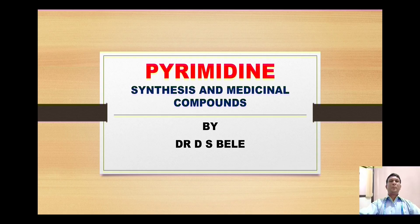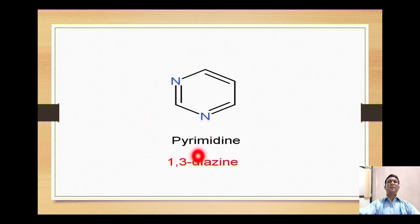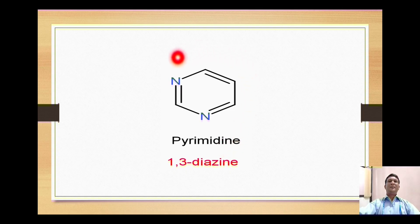Our today's topic is a very important heterocyclic compound, that is pyrimidine. In this lecture we will go through the synthesis and some medicinal compounds of this heterocycle. Pyrimidine is a six-membered heterocyclic ring which contains four carbons and two nitrogens. These two nitrogens are at the 1 and 3 positions. As per the IUPAC nomenclature its name is 1,3-diazine. Commonly it is called as pyrimidine.